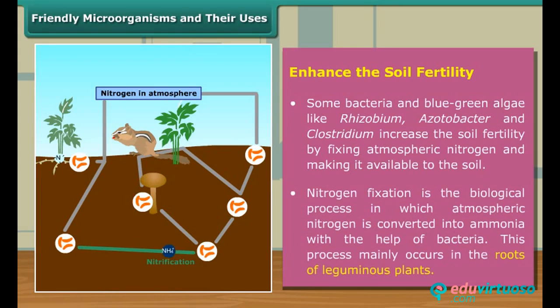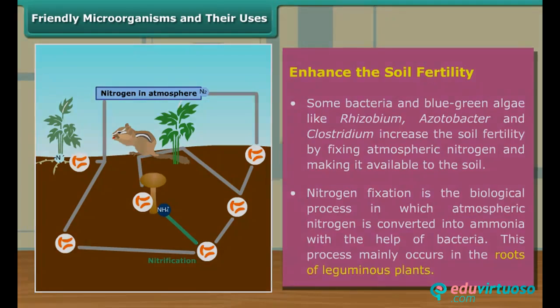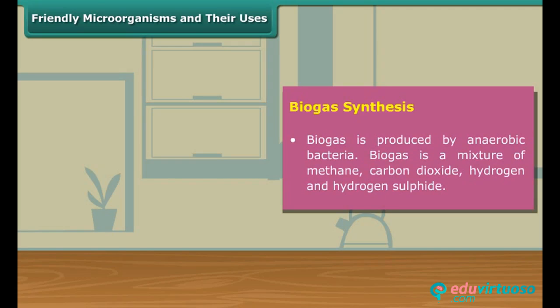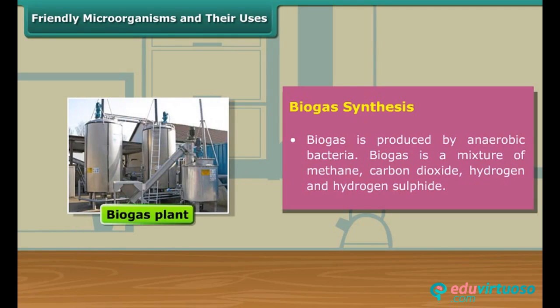Nitrogen fixation is the biological process in which atmospheric nitrogen is converted into ammonia. There are other friendly anaerobic bacteria that are used in the synthesis of biogas. Biogas is a mixture of methane, carbon dioxide, hydrogen, and hydrogen sulfide.